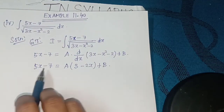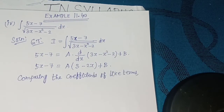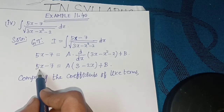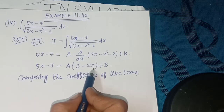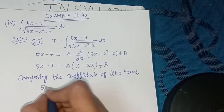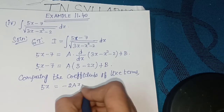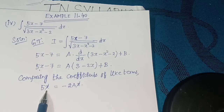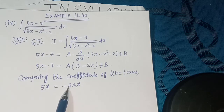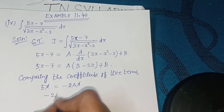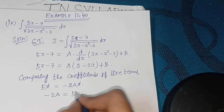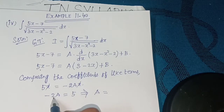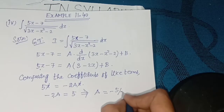Comparing the coefficients of like terms. For the x-term: 5 = -2a, so -2a = 5, which implies a = -5/2.